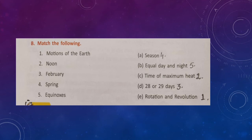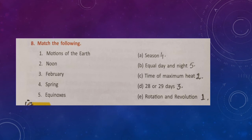Match the following: number 1, motions of the earth — matches with E, rotation and revolution. Number 2, noon — matches with C, time of maximum heat. Number 3, February — matches with D, 28 or 29 days; a normal year has 28 days and a leap year has 29 days. Number 4, spring — matches with season. Number 5, equinoxes — matches with equal day and night; there are two equinoxes: spring equinox on 21st March and autumn equinox on 23rd September.